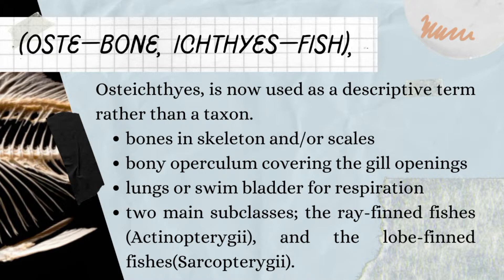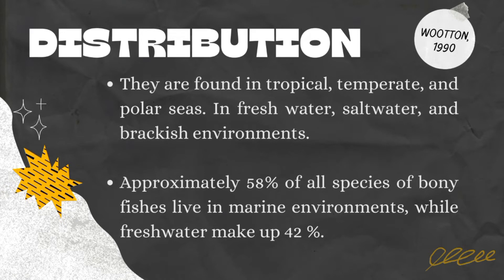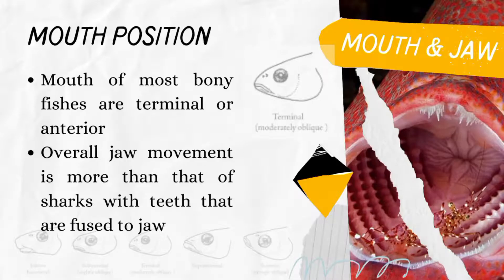Bony fishes inhabit almost every body of water. They are found in tropical, temperate, and polar seas, as well as virtually all freshwater environments. Bony fish make up to 58 percent of all the fishes living in the ocean environment and up to 42 percent in freshwater.